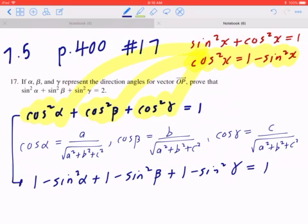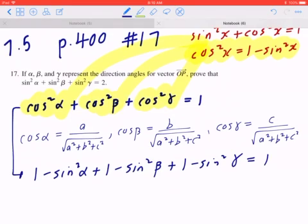Now, begin with the end in mind. Your goal is to show that sine squared alpha plus sine squared beta plus sine squared gamma equals to 2. So I'm going to bring all the numbers to the left hand side and bring all the sine squared alpha beta gamma to the right hand side.